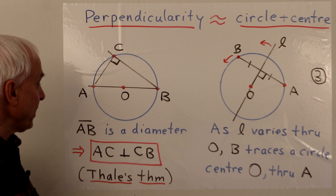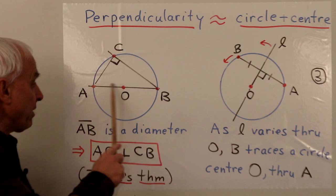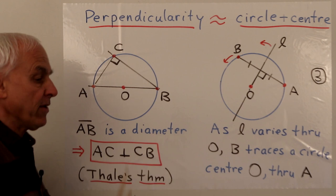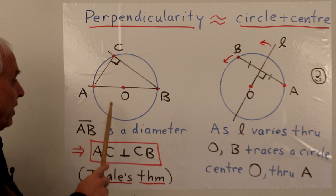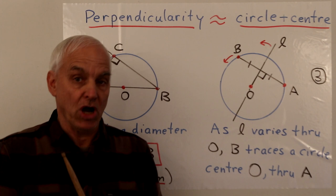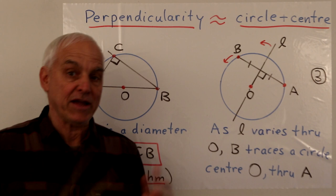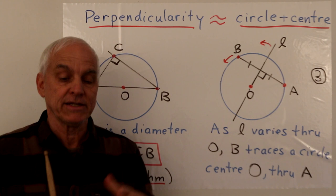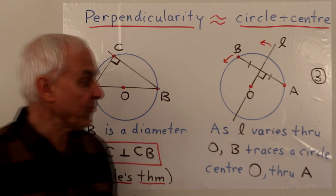One way to see that a circle gives us a notion of perpendicularity is to observe that if we take a diameter of the circle — a line passing through the center, say AB — then any triangle subtended by that in the circle will give us a right angle. If C is any point on the circle, then the line AC is perpendicular to CB. This is called Thales' theorem, perhaps the second most ancient and important theorem in mathematics after Pythagoras's theorem.